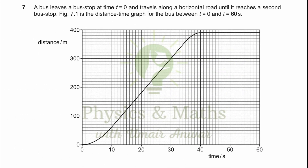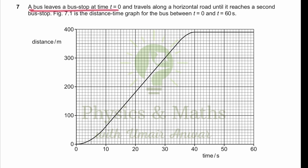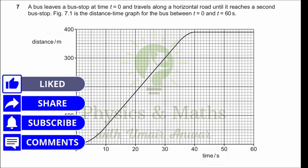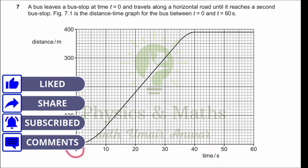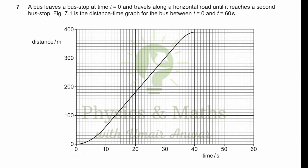The question says: a bus leaves a bus stop at t equals 0 and travels along a horizontal road until it reaches a second bus stop. Figure 7.1 is the distance-time graph for the bus between t equals 0 and t equals 60 seconds. In the graph, distance is on the y-axis and time on the x-axis. The bus leaves the first stop, reaches the second bus stop, after which the graph becomes horizontal, meaning the distance is not changing — the bus is not moving.